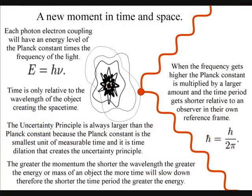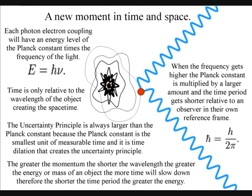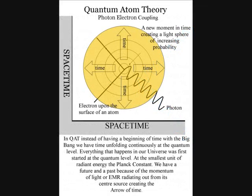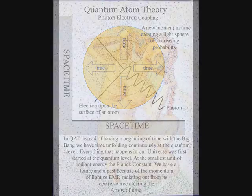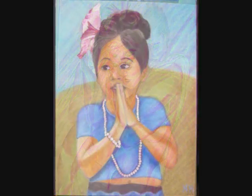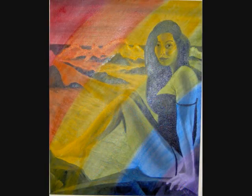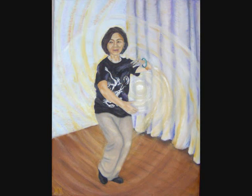In this theory, at the quantum level of the atoms, the moment of now is created by a single photon-electron coupling, creating a wave function of future possibilities. Even the individual atoms of the observer are radiating electromagnetic radiation continuously. The observer will feel this as the continuous flow of time, and as the aging process.